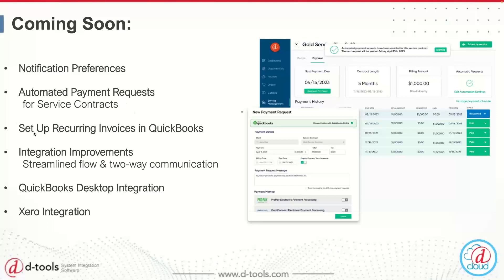The next feature goes hand in hand with automation: setting up recurring invoices in QuickBooks. If you use QuickBooks, you may have used this functionality before — making an invoice recurring is very helpful for service contracts. Right now you have to go into QuickBooks to set it up, but we're going to automate that process directly within D-Tools Cloud so it will be sent to QuickBooks automatically as a recurring invoice. Expect this also in early Q3.